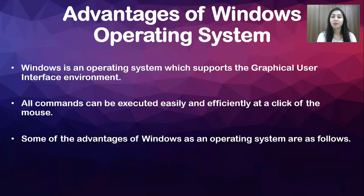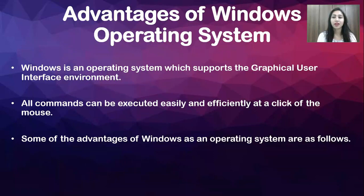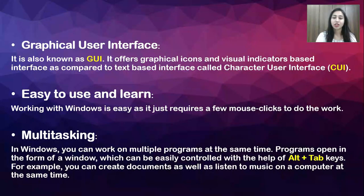Some of the advantages of Windows as an operating system are as follows. There are three main advantages in Windows operating system: first is graphical user interface, second is easy to use and learn, and third is multitasking. Let's see them one by one.